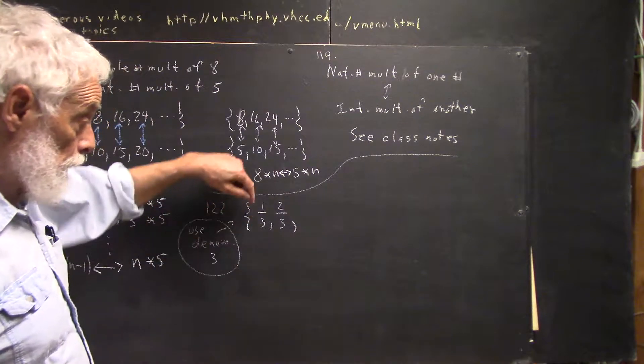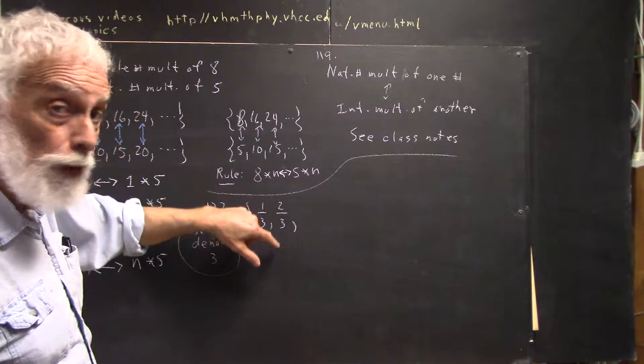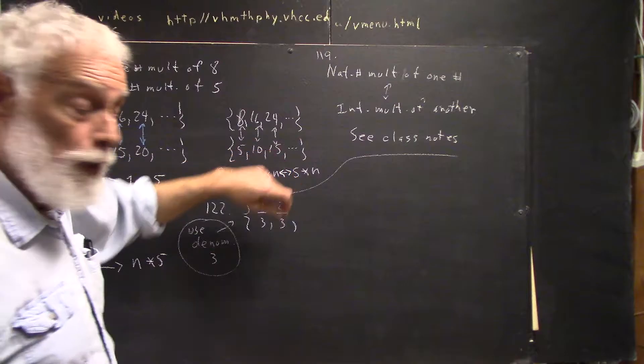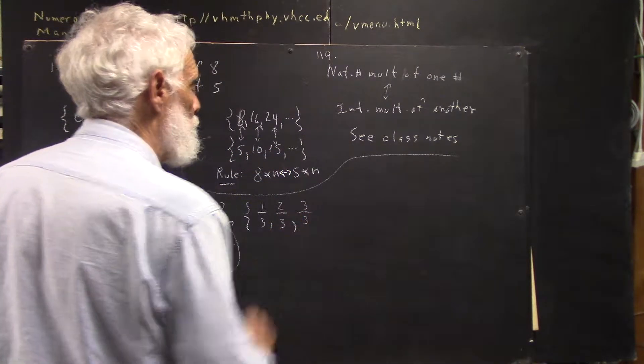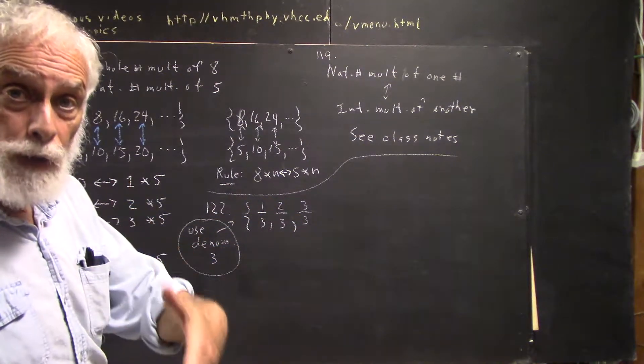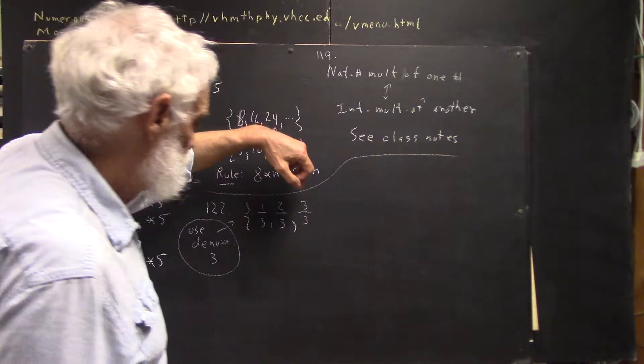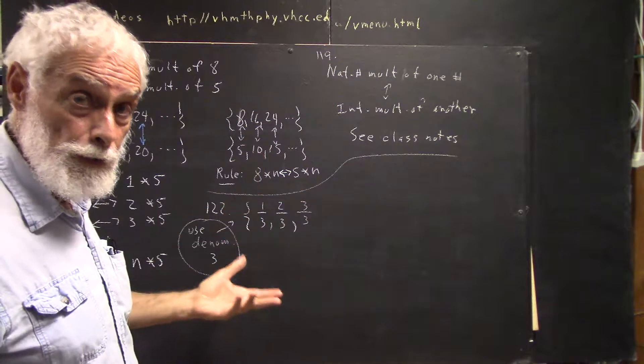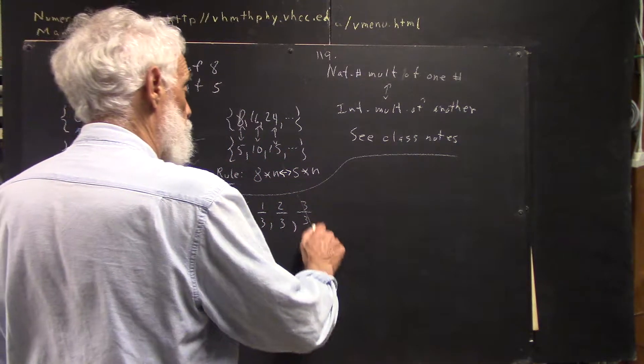So we would start off with 1 third, then 2 thirds. It's got to be an integer over an integer, and the denominator has to be 3. So the first integer is 1, the second integer is 2. The third integer is 3, but we can't write down 3 over 3 because what I ask you to do is write them down so that they're in lowest terms. 3 over 3 is not in lowest terms. 3 over 3 reduces to 1 over 1. So we're not going to write that.